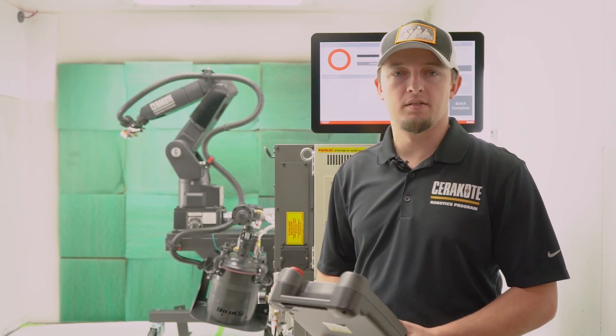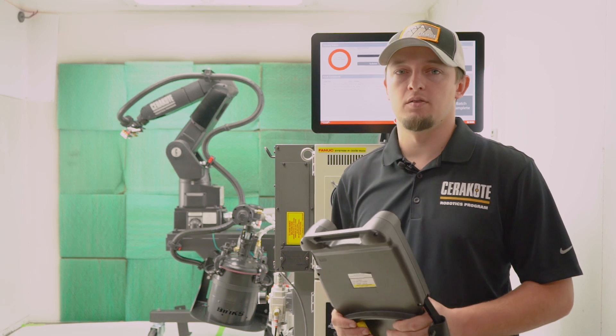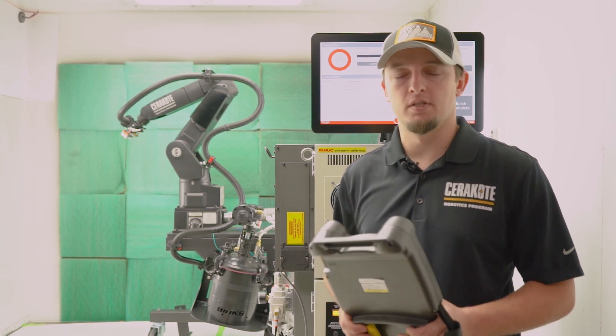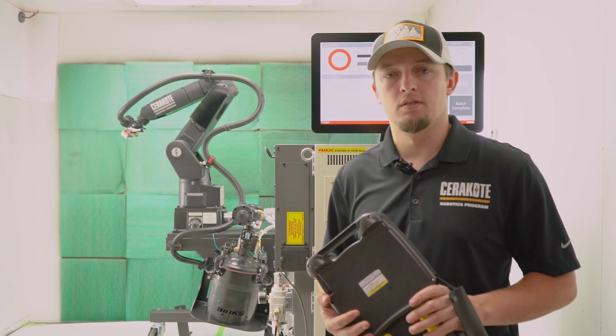Hi, this is Remington with Cerakote Robotics. Today we're going to teach you guys how to jog the robot. We have seven axes on this robot that we're going to jog. Group one is the arm itself which is six, and then group two which has one axis which is the turntable.